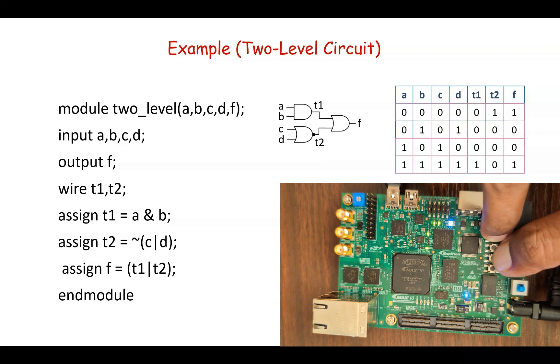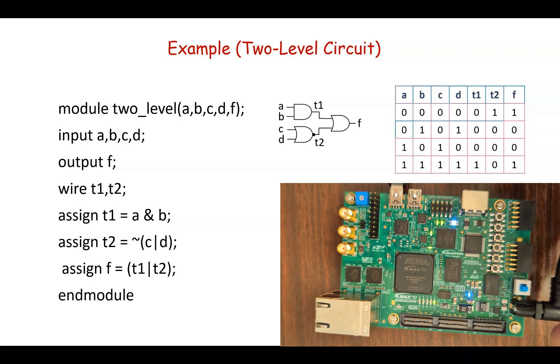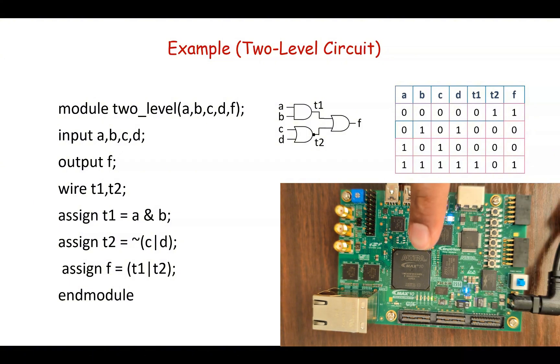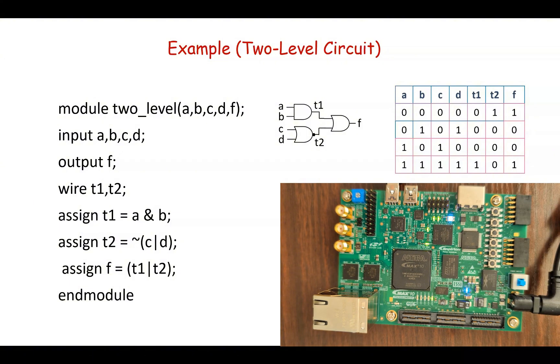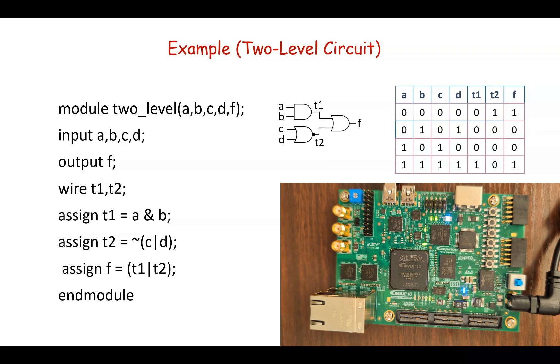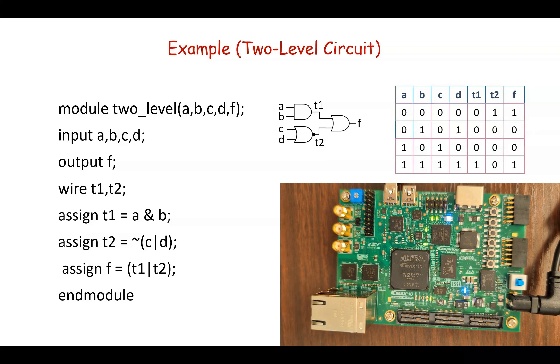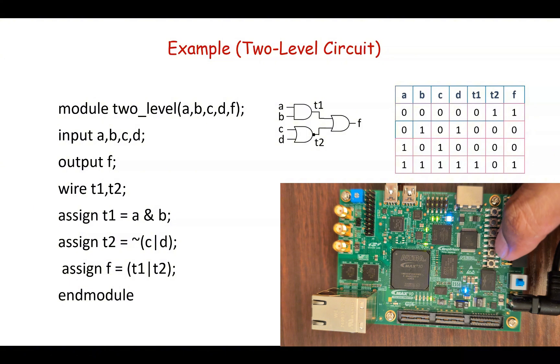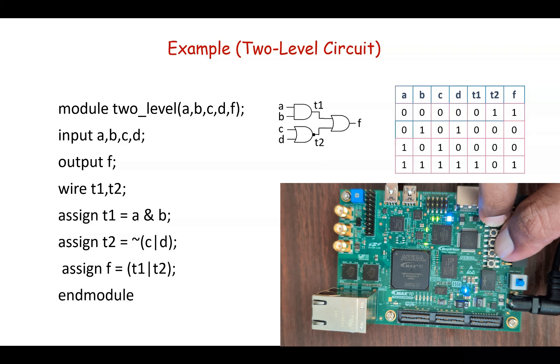And then again if we leave the buttons, all of the buttons are high so the output is high. Next, if b is 0 and d is 0, then the output will also be 0. So this is the b button and this is the d button. If we press these two then you can see the output is 0.